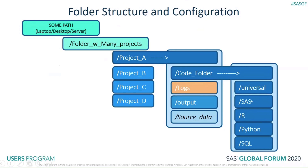If we structure our code that way, our SAS code is SAS-centric and our Python code is Python-centric. Our output would be somewhere separate from the code folder, and our source data somewhere else as well. This folder configuration works well with Git because our Git would be at the highest level, and our logs, output, and source data would be symbolically linked — not hard-coded at that level. With .gitignore, we could protect the integrity of the repository and only focus on version-controlling our code.